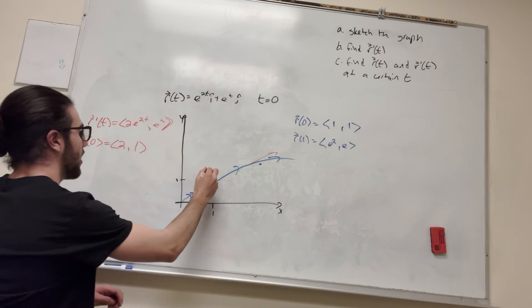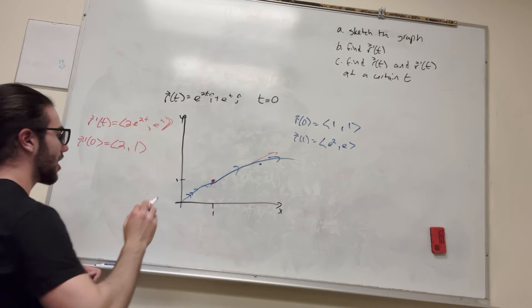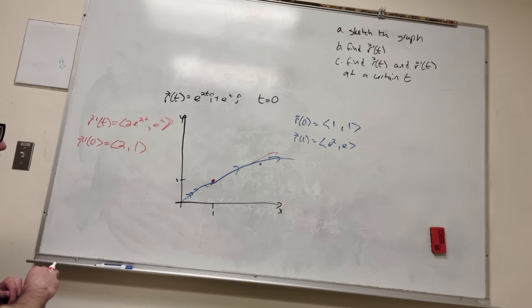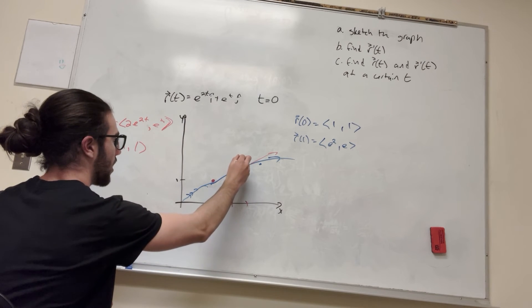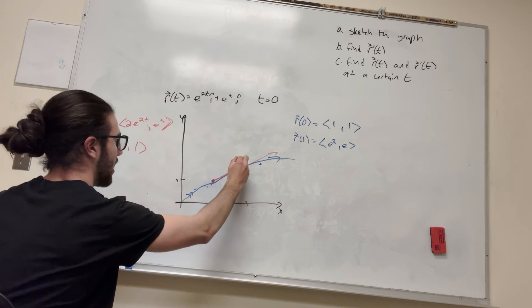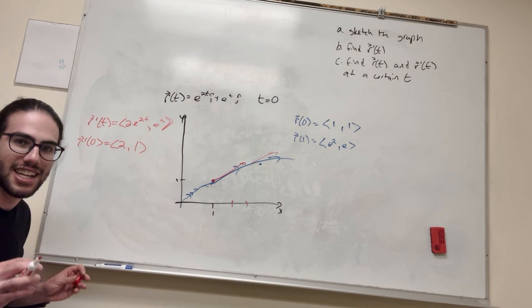Alright, so let's go back to our point. We know that this is where t is equal to 0, at 1, 1. And it goes off 2 in the x direction, so like over here, and 1 in the y direction. So boom, and as it checks out, it's parallel, it's tangent.